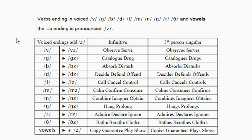So examples of consonants in this group are V, G, B, D, L, M, N, NG, R, and the TH usually with an E. And open syllables that end with a vowel sound — so words that end like copy, guarantee, play, show — those all end with a Z sound in the third person.